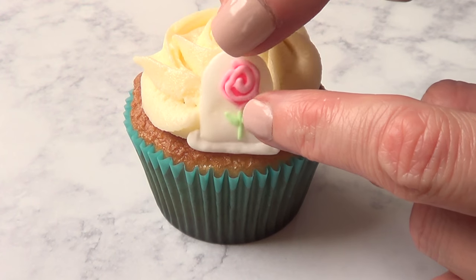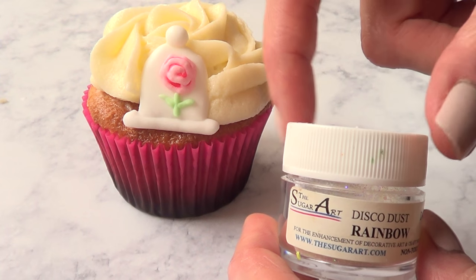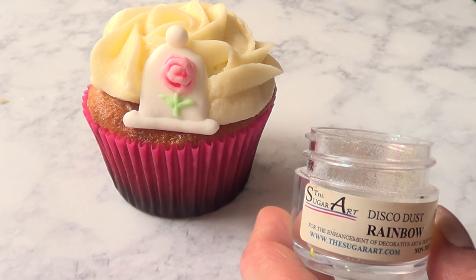For my frosting, I'm using my cream cheese delicious frosting. I do have the recipe on my channel, check it out. And I swirl some frosting with my 2D tip and I piped a rosette.